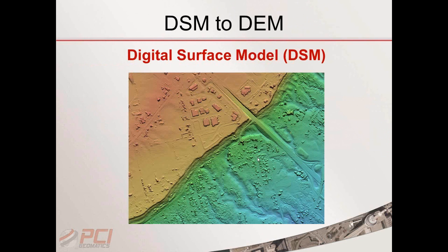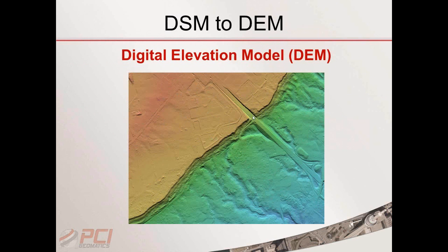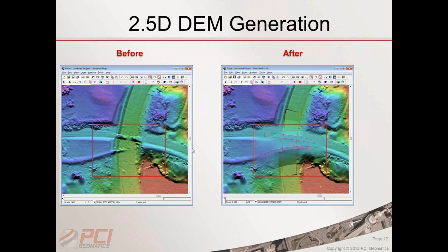Here is an example of a DSM extracted directly from OrthoEngine — you can see the outlines of buildings and trees. We want to convert it to a DEM by removing those surface features while retaining the bare earth elevation. The challenging part is how we eliminate building features without negatively affecting our steep terrain slopes. The live DEM editor comes with all the tools needed to perform these operations, including for complex features such as bridges, varying terrain slopes, cliffs, and so on.